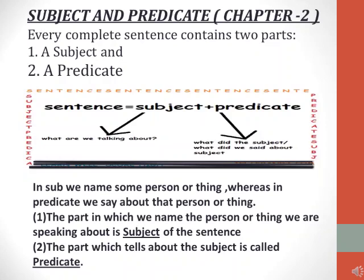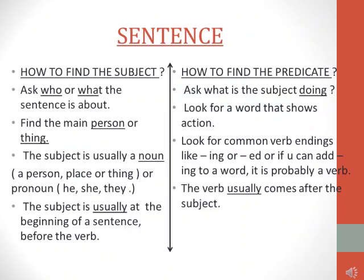In this slide, we note that the part in which we name the person or thing we are speaking about is the subject of the sentence. And the part which tells about the subject is called the predicate. We are going to learn more about how to find a subject and a predicate in a sentence.